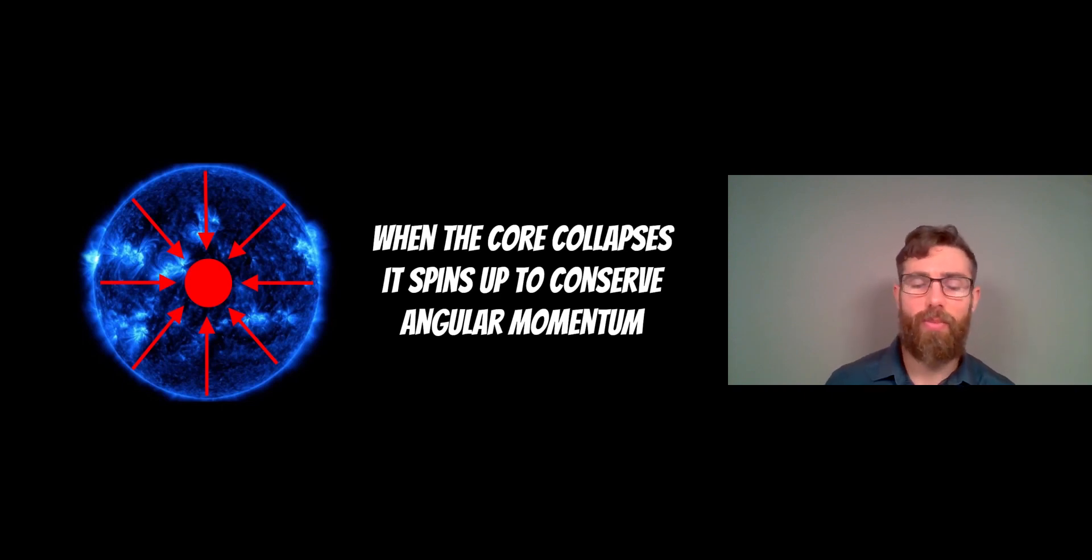It's not perfectly conserved because you do lose some material, but this is the general idea as to why they spin very fast. White dwarfs will spin fast and black holes are thought to have some rotation as well, but for the purpose of pulsars, this is why they rotate so fast.